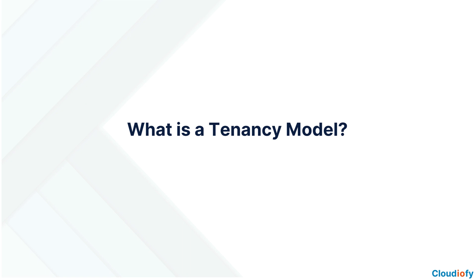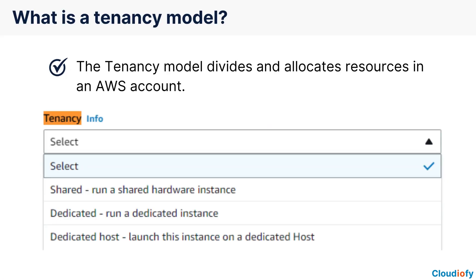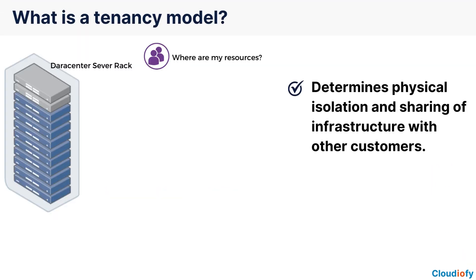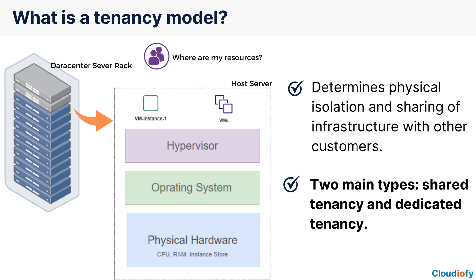What is a tenancy model? A tenancy model is a way of dividing and allocating resources within an AWS account. It determines how your resources are physically isolated and whether you share your infrastructure with other customers. In AWS, there are two main types of tenancy models: shared tenancy and dedicated tenancy.